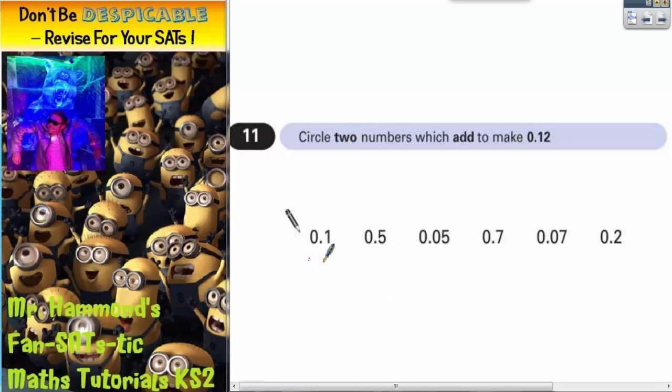So for example, 0.1 is the same as 0.10. 0.5 is the same as 0.50. 0.05 is okay because that's already got two. 0.7 is the same as 0.70 and 0.07 is okay as well. 0.2 is the same as 0.20.